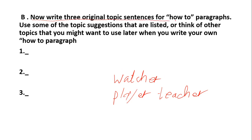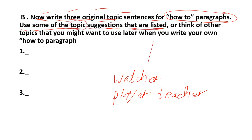Now write three original topic sentences for a 'how to' paragraph. Use some of the topic suggestions that are listed (استخدم بعض من اقتراحات المواضيع التالية). Or think of other topics you might want to use later (والتي ربما تستخدمها لاحقاً) when you write your own 'how to' paragraph (عندما تكتب البراغراف الخاص فيك من نوع how to).